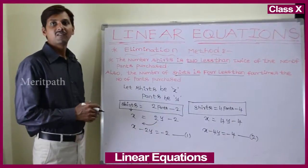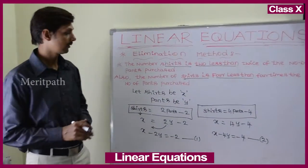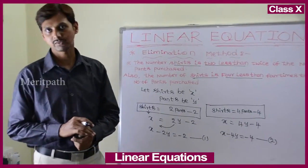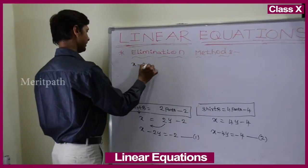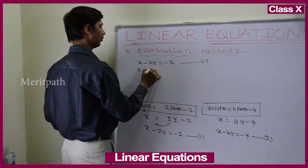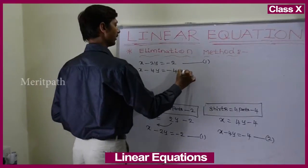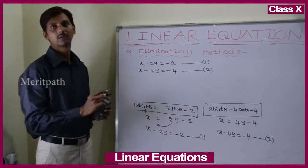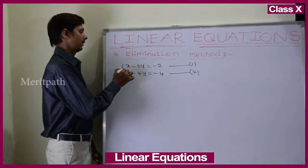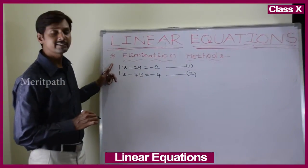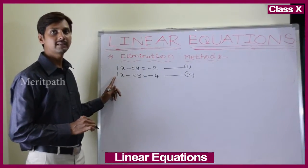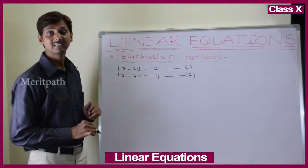We will find out the value of x and y using the elimination method, and then we will know how many shirts and how many pants Rabi purchased. The first equation is x minus 2y equals minus 2, and the second equation is x minus 4y equals minus 4. We can observe that the coefficients of x in both equations are the same, so we subtract the two equations.